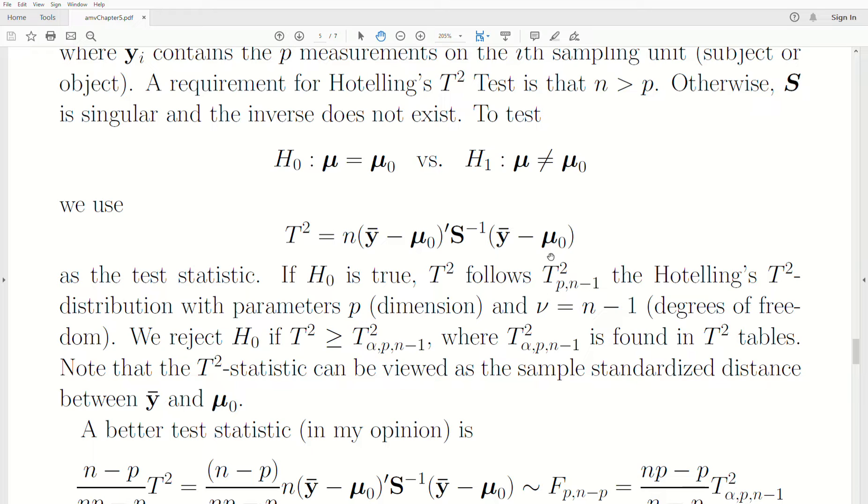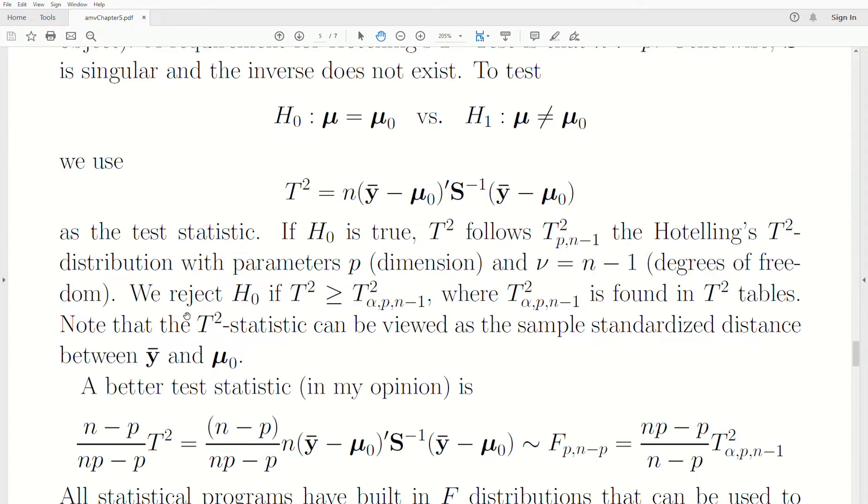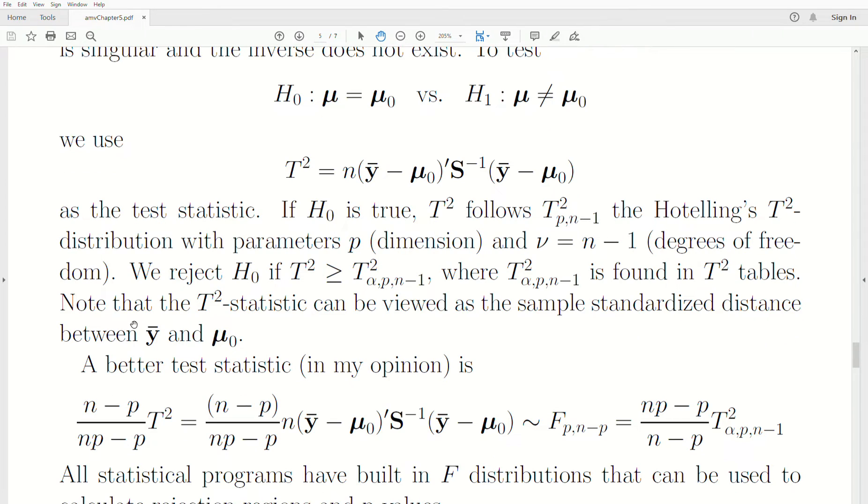T² follows what's called a T² distribution, Hotelling's T² distribution. P is the numerator degrees of freedom, some just call it the dimensions. And then the denominator degrees of freedom, and some just call it the degrees of freedom, is nu, the Greek letter nu, which is n minus one. We reject if T² is greater than some critical value, where you have to look up that critical value in a table. Note that T², this Hotelling's T², can be viewed as a sample standardized distance between these two vectors, the sample mean vector and the hypothesized population mean vector.